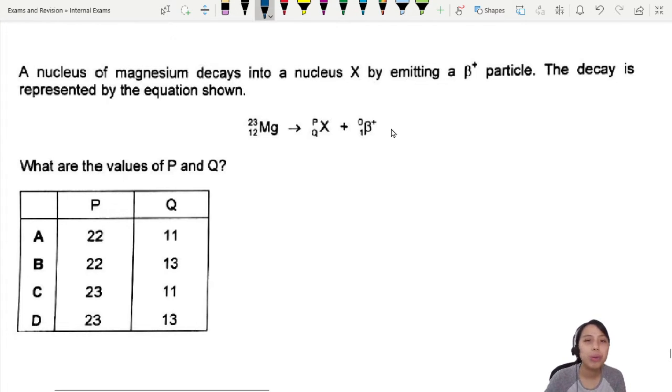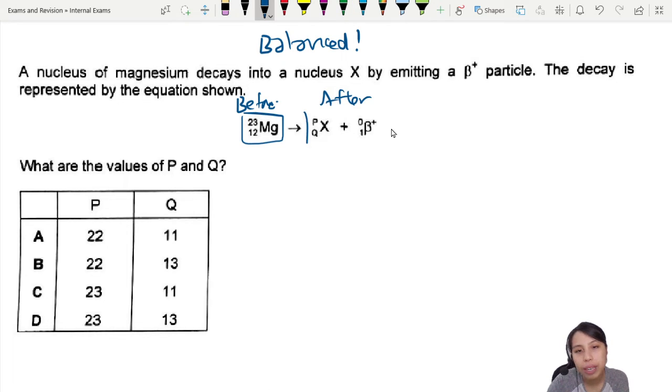This kind of what we call nuclear reaction must be balanced. So the key to solving this question is to balance both sides of the equation. So you have a before reaction, it's just one magnesium here. And you have after reaction, all these are what we call the products.